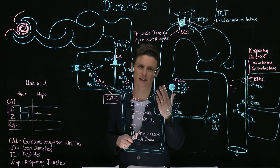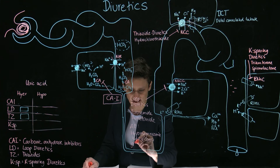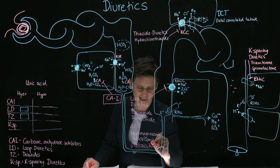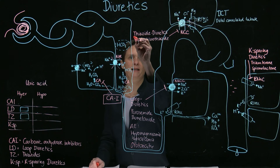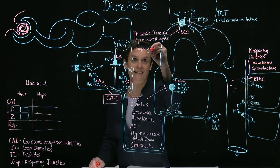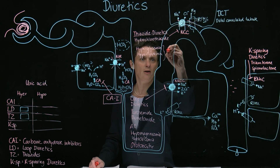A very important adverse effect for loop diuretics is ototoxicity — patients can get tinnitus. This is because NKCC is also found in the inner ear. Other important adverse effects for thiazide and loop diuretics include hyperglycemia and hyperlipidemia, which go along with the hypokalemia.